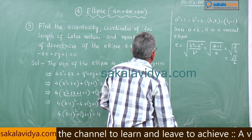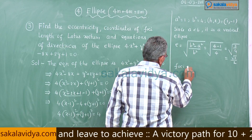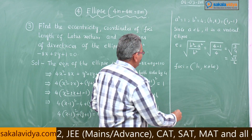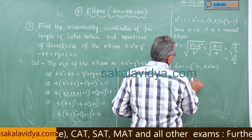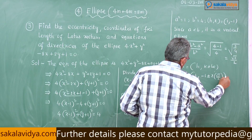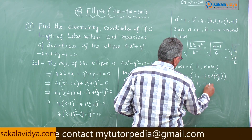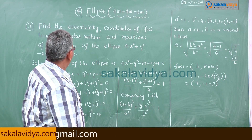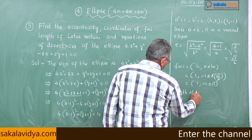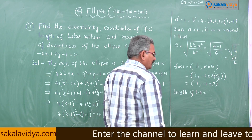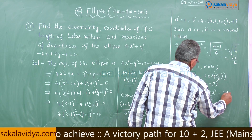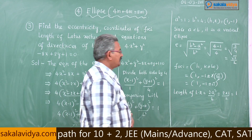The foci are at (h, k ± be). Since this is a vertical ellipse, foci = (1, -1 ± 2·(√3/2)) = (1, -1 ± √3). For the length of latus rectum, the formula is 2a² / b = 2 × 1 / 2 = 1 unit.